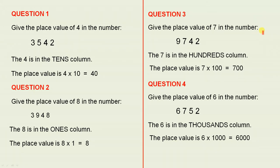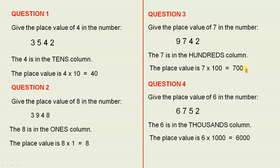Question 3. Give the place value of 7 in the number 9742. The 7 is in this column — the 7 is in the hundreds column. The place value is 7 times 100, which is 700.